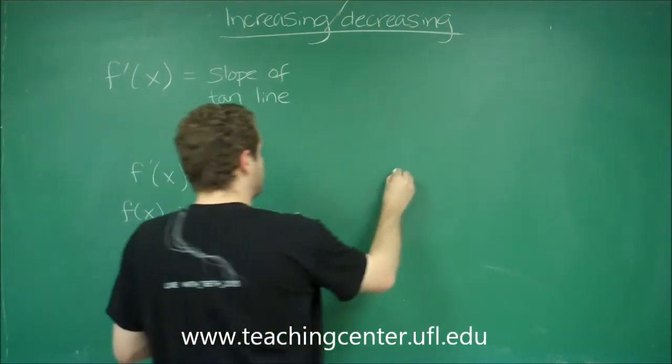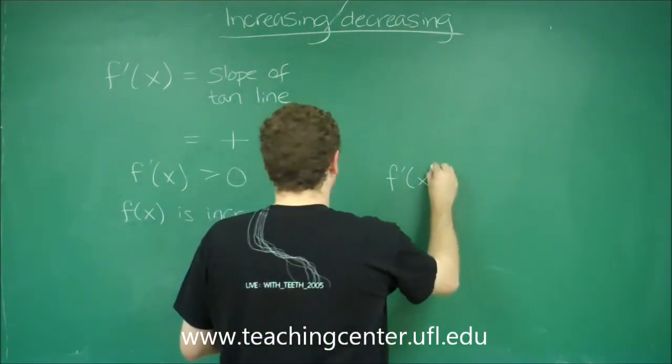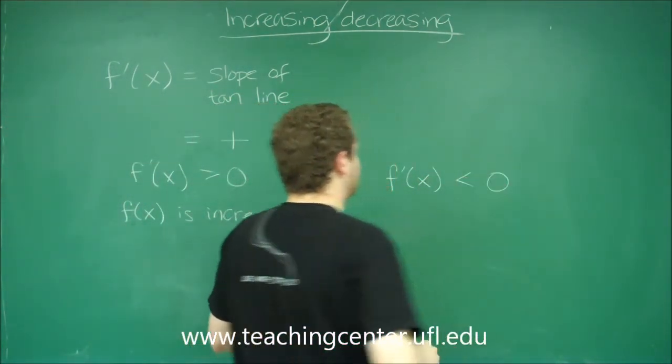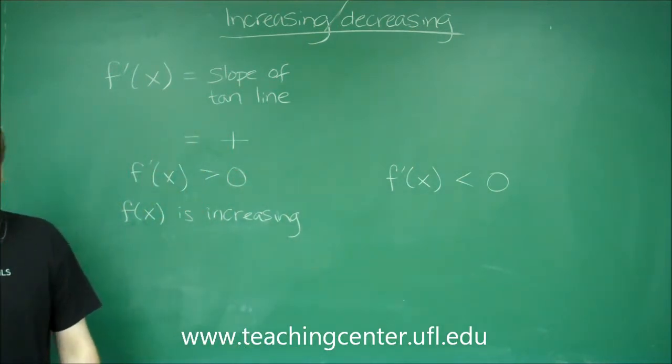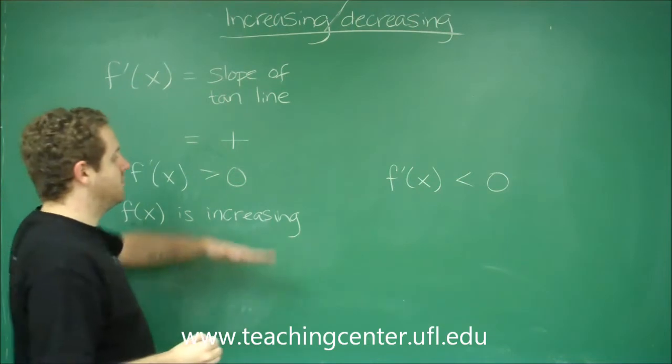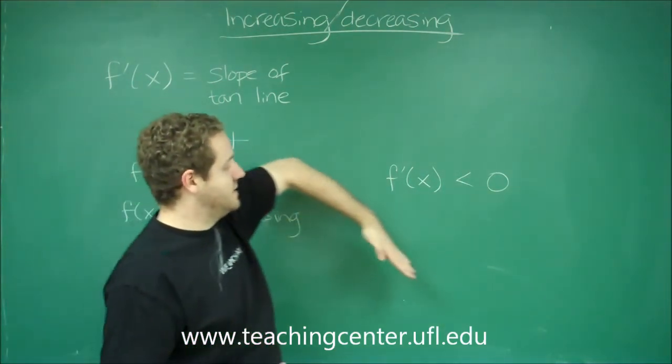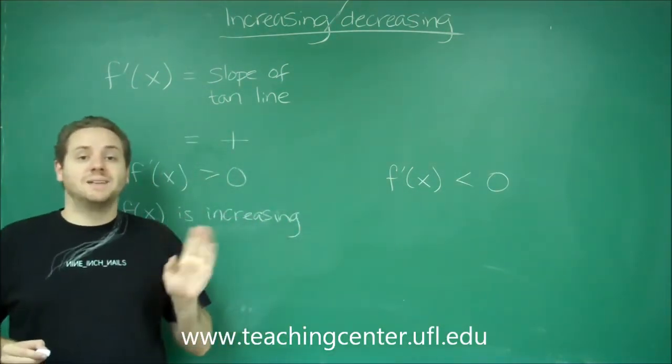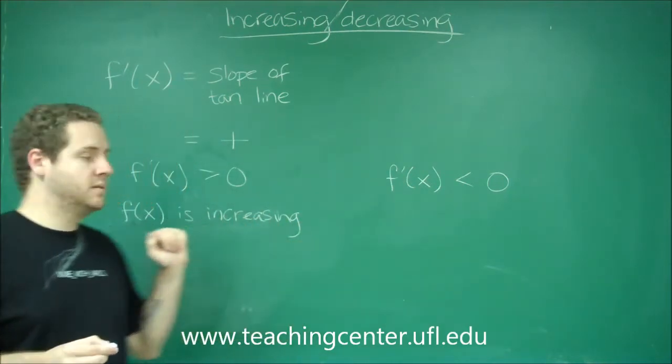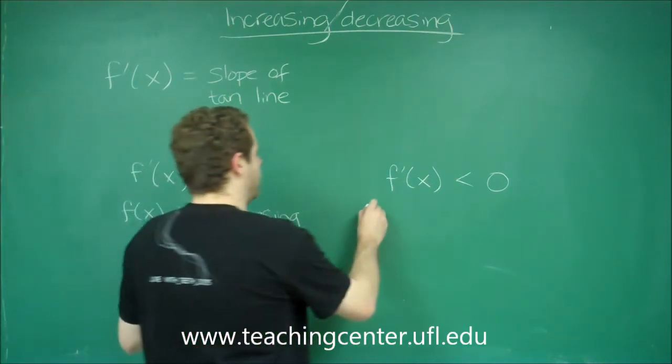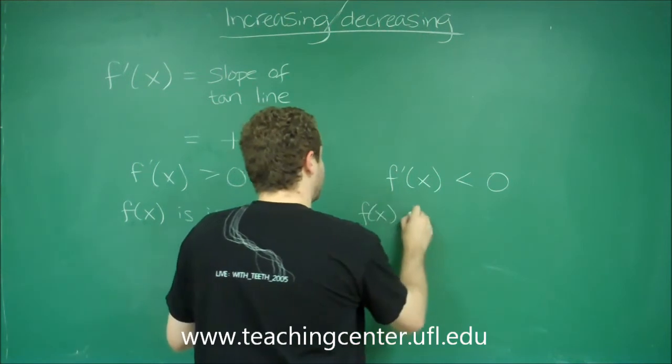Similarly, if f prime of x is less than zero, meaning f prime of x is negative, your derivative is negative, your slope of your tangent line would be negative, and negative slopes are lines that are decreasing as x moves to the right, which tells you that f of x is decreasing.